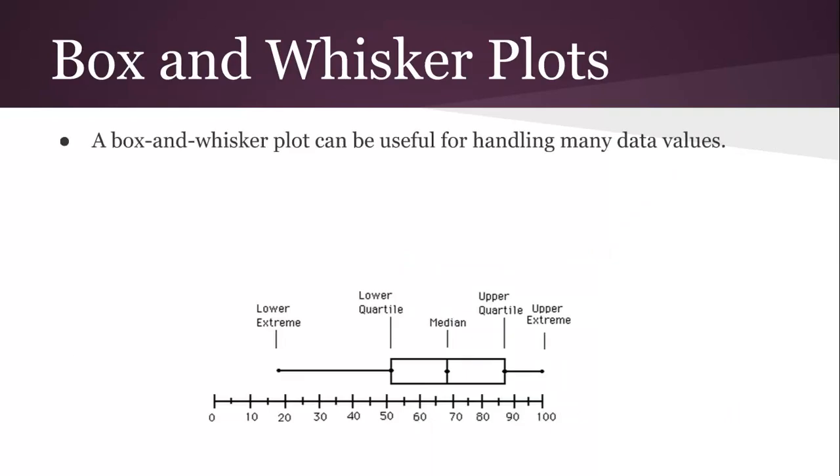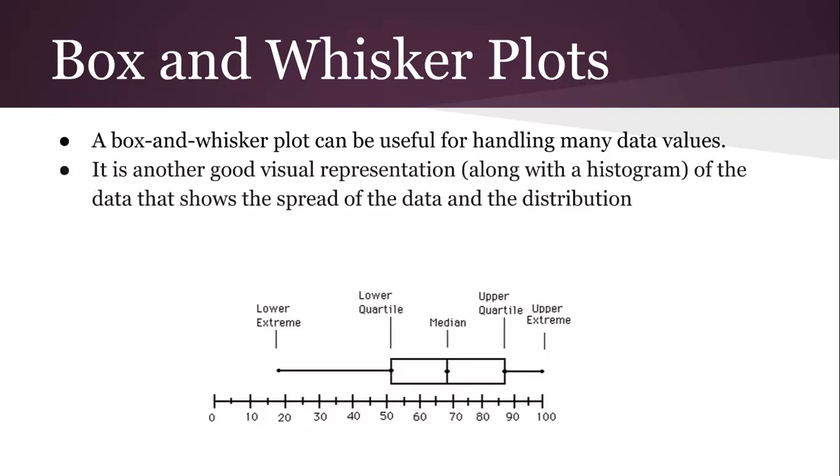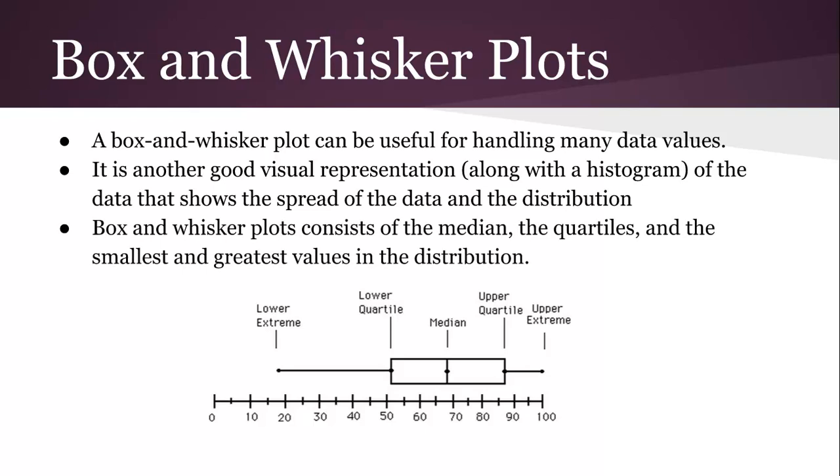And the new graph today is the box-and-whisker plot. It's really helpful for handling a lot of data values. It's another good visual representation that shows the spread of the data. So we actually show the spread on the box-and-whisker plot. It consists of the median, the quartiles, and the smallest and greatest values in the distribution.